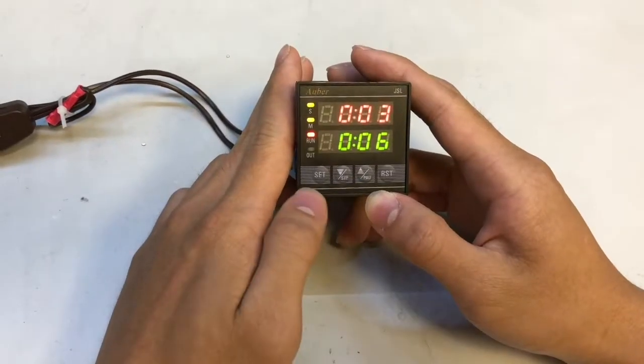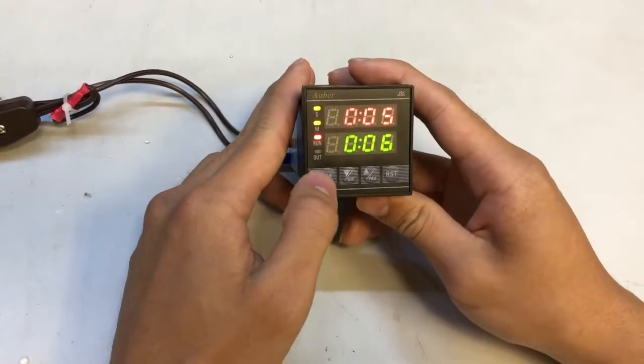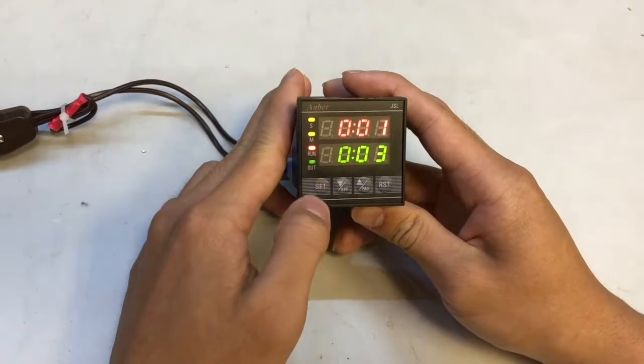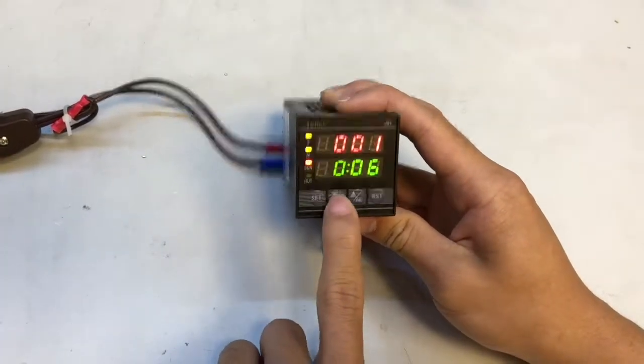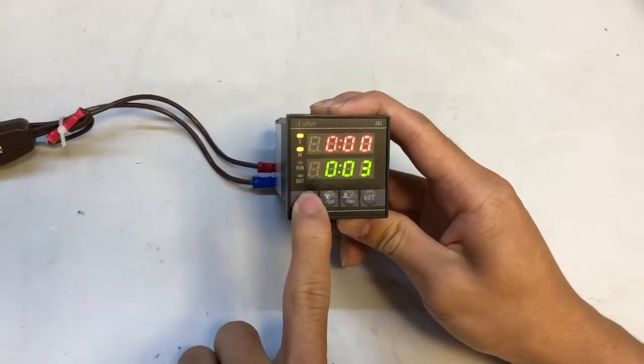You notice if you're trying to change your parameters in programming mode, it just doesn't work because it's constantly cycling. So you need to press your stop button first before you go into programming mode again.